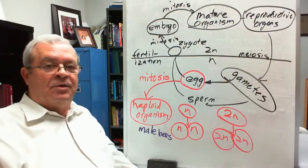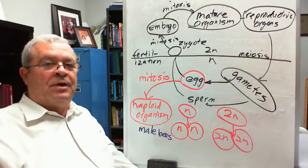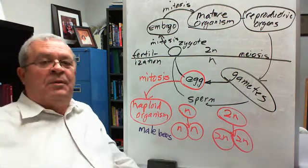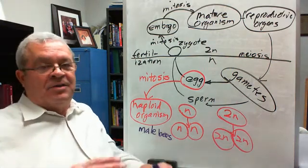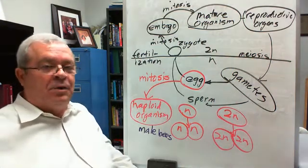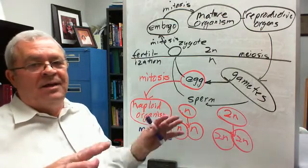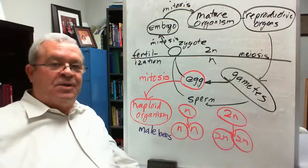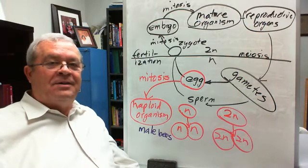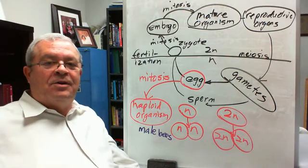An example of parthenogenesis in the animal kingdom. A detour from the normal, what is thought of as the normal basic animal kingdom life cycle. Do we people do that? No, we don't. But there are certain species that do. Alright, ladies and gentlemen, that's it for parthenogenesis.